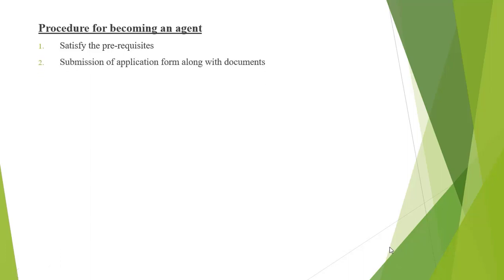Second step: submission of the application form along with the required documents. Once your prerequisites are complete, you will apply for becoming an agent by submitting the required application form to the IRDA.